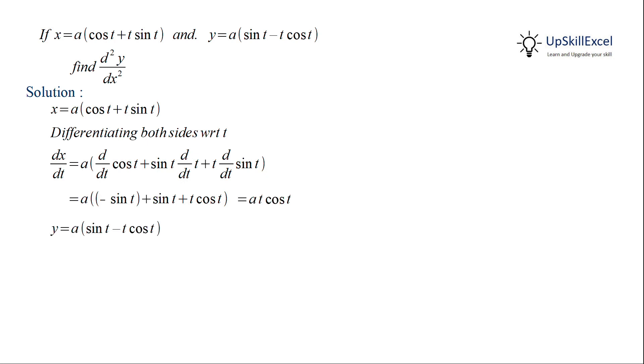Similarly for y, we observe that the second term t cos t is in product format. So again we differentiate using the product rule and apply derivative of sin t which is cos t, derivative of t which equals 1, and derivative of cos which equals minus sine. This gives us dy/dt equals at sin t.